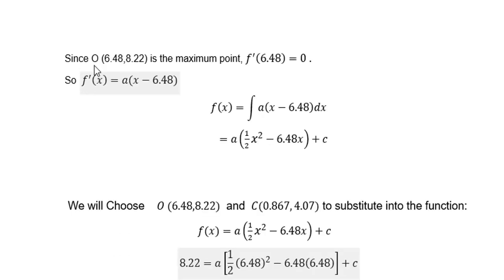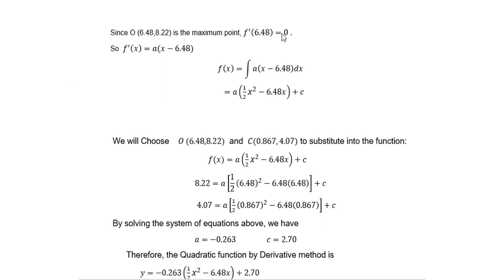Since this is the maximum point, we have f'(6.48) = 0. So we can write down f'(x) = a(x - 6.48). This a is a constant number.